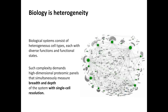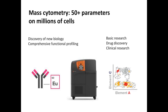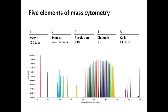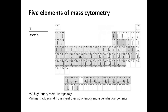In advance of Dr. Rao's presentation, I'd like to give you an introduction to mass cytometry. Biology is very heterogeneous, and biological systems consist of heterogeneous cell types, each with diverse functions and functional states. This complexity demands high-dimensional proteomics panels that can simultaneously measure both the breadth and depth of the system with single-cell resolution. Mass cytometry enables this. With the ability to look at more than 50 parameters on millions of cells, it uniquely enables the discovery of new biology, as well as comprehensive functional profiling across basic research, drug discovery, and clinical research.